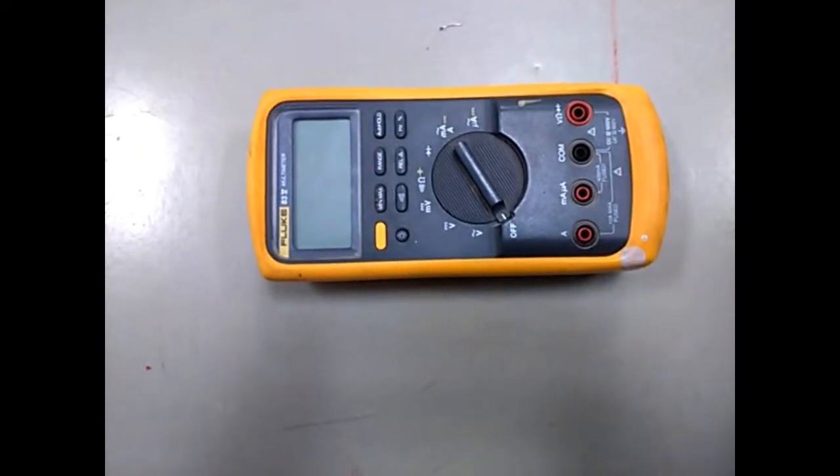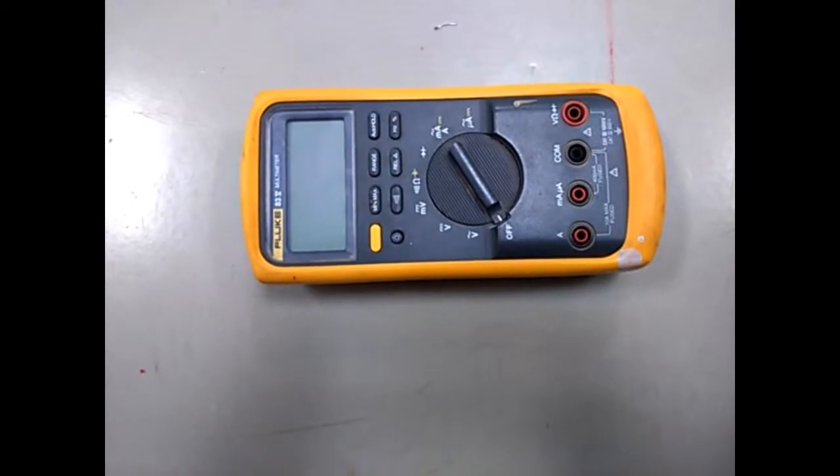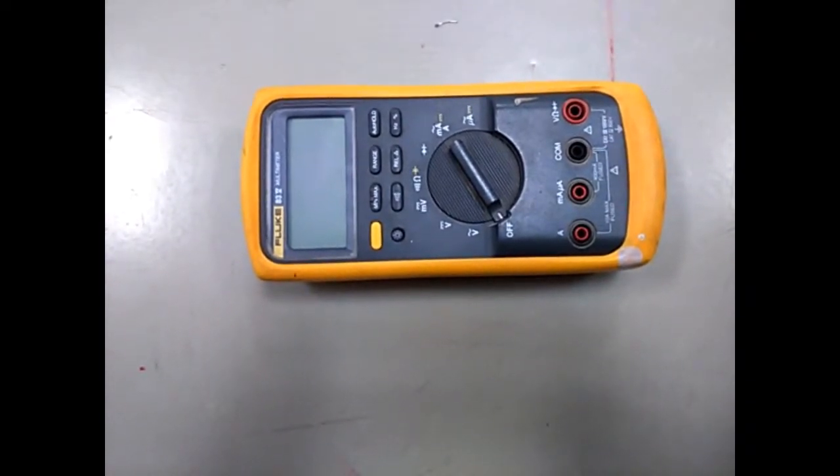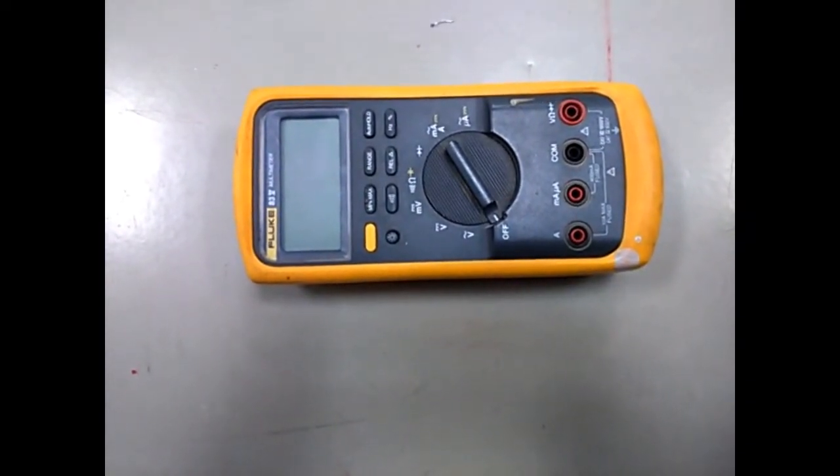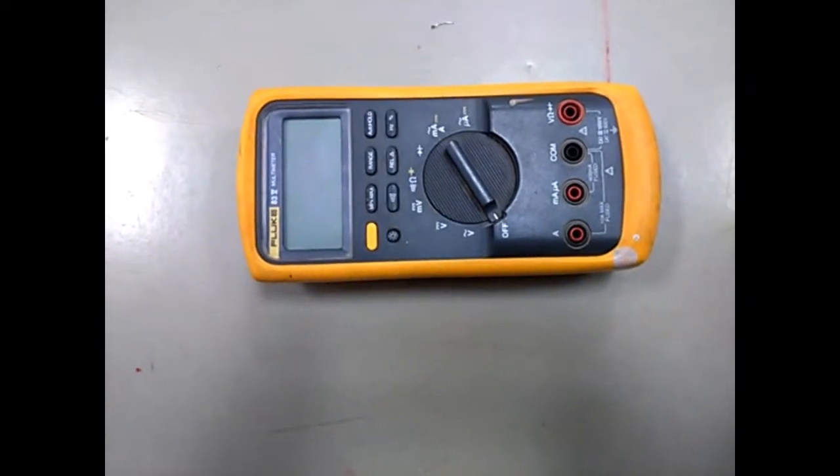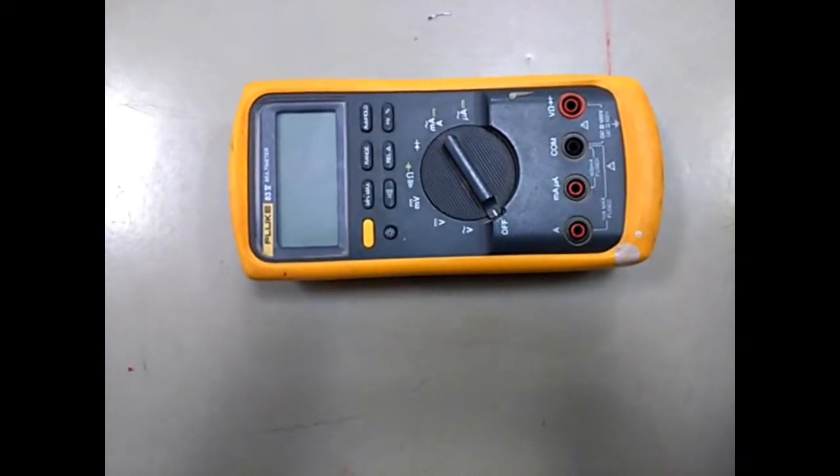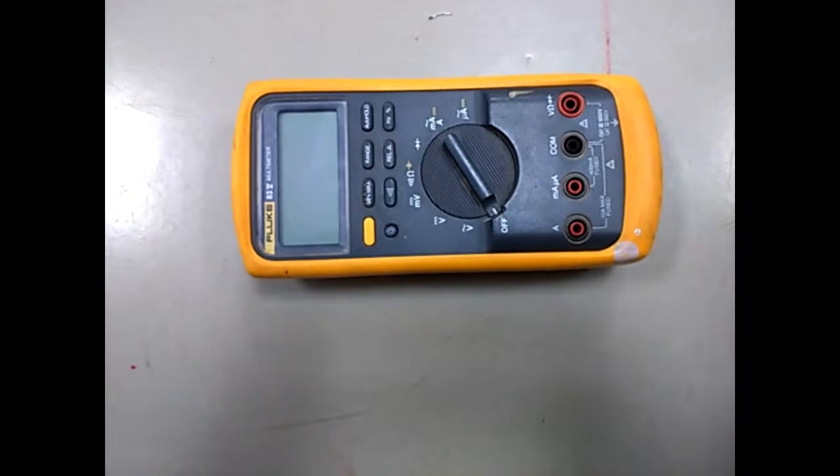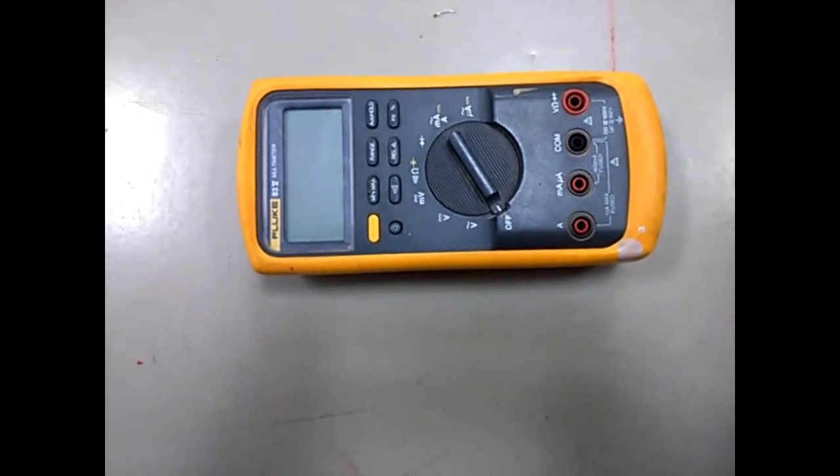To check voltage with a multimeter, we need two leads: one for neutral and one for phase. I will show you the leads and where we have to place them in the multimeter. These two leads will be used, one for neutral and one for phase.